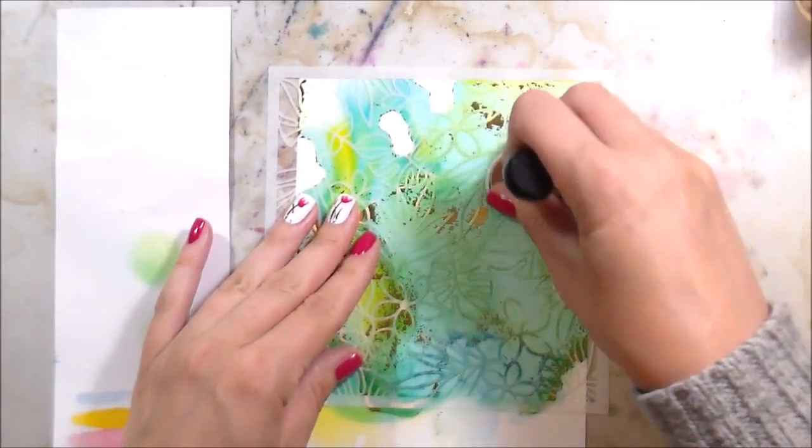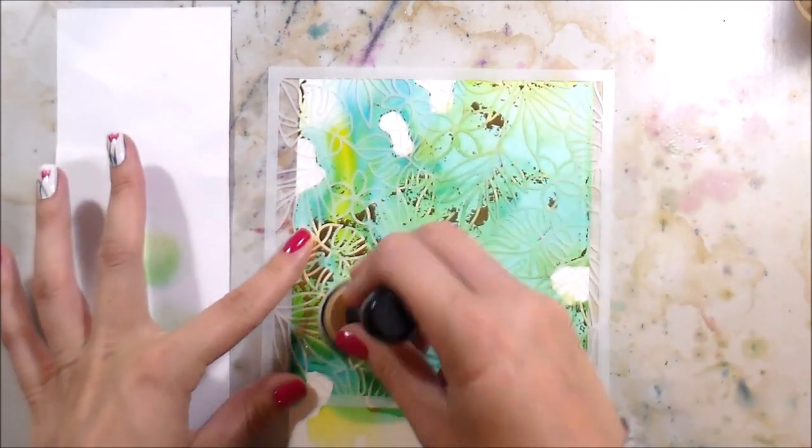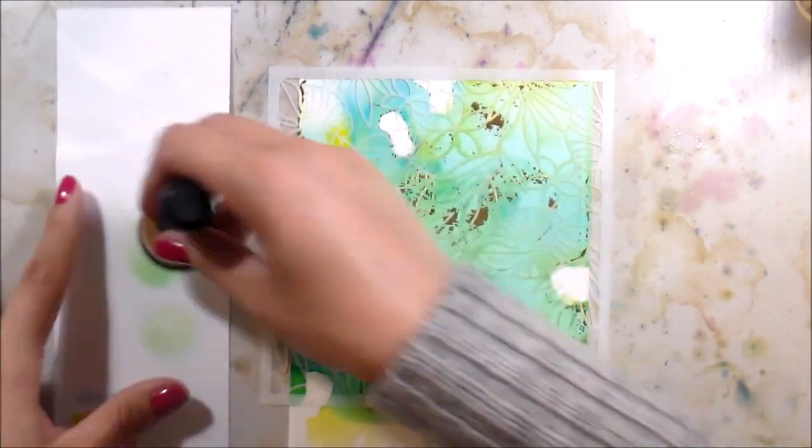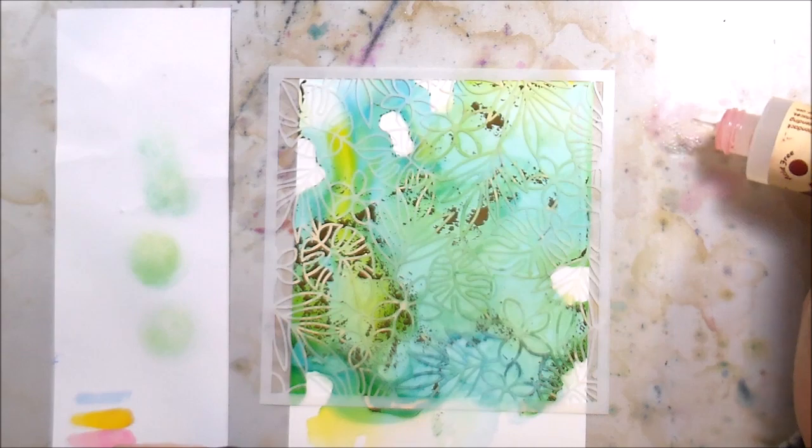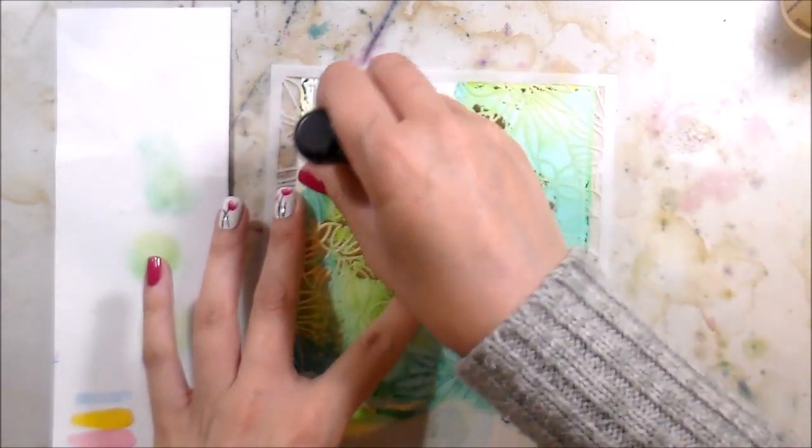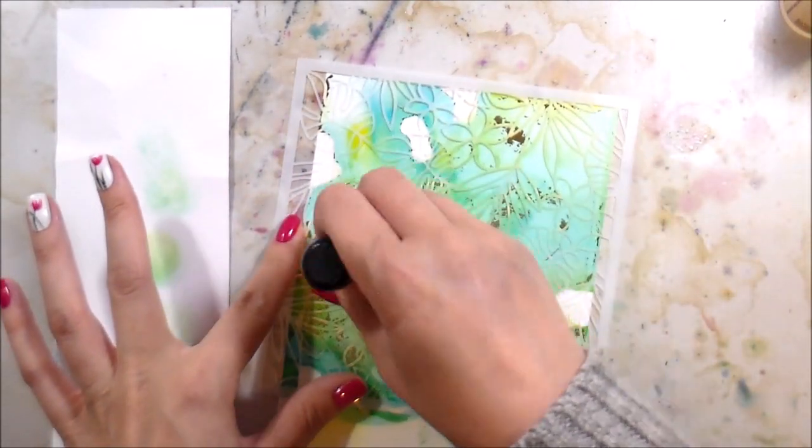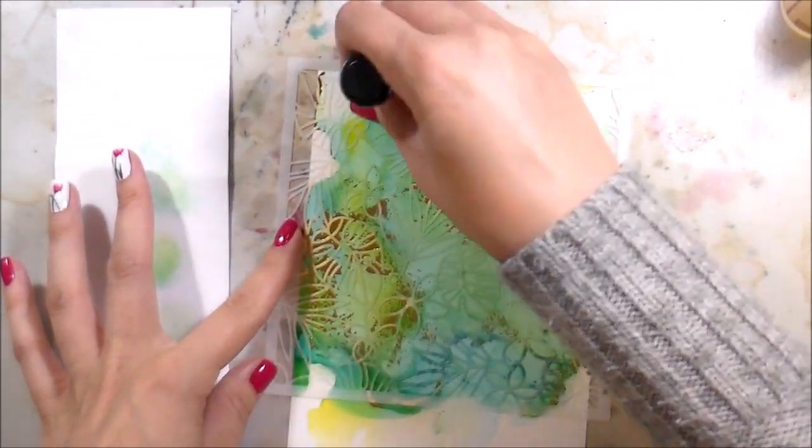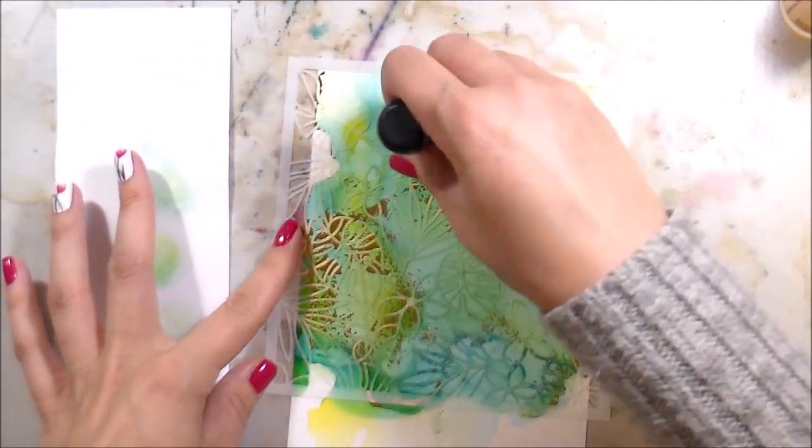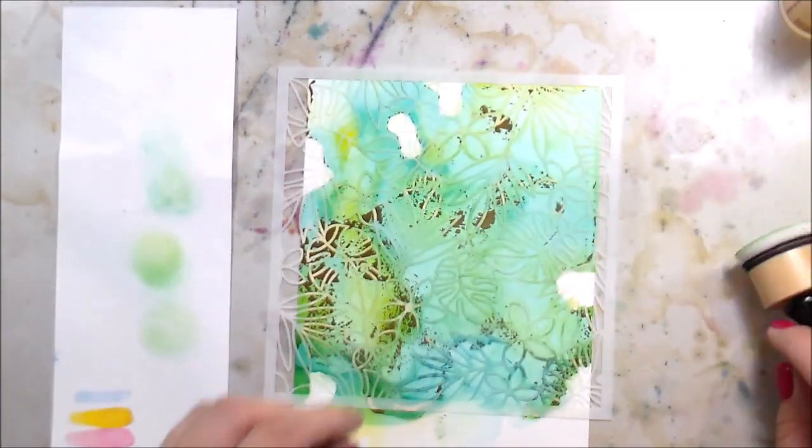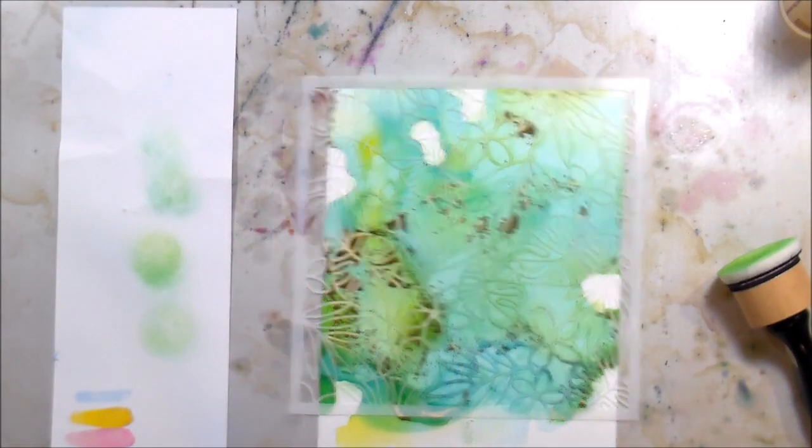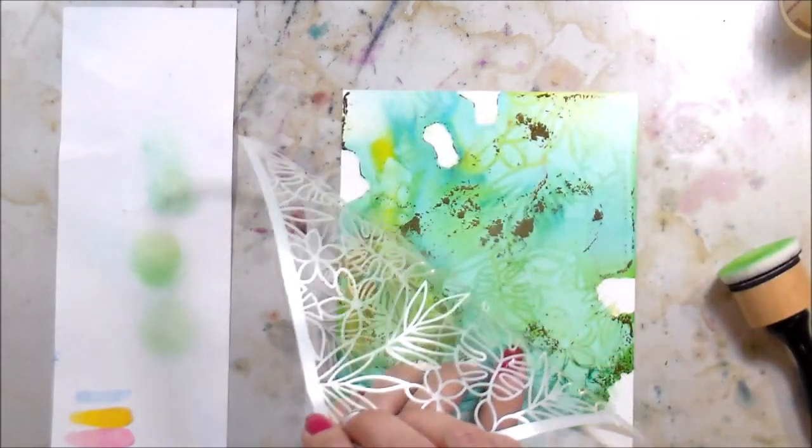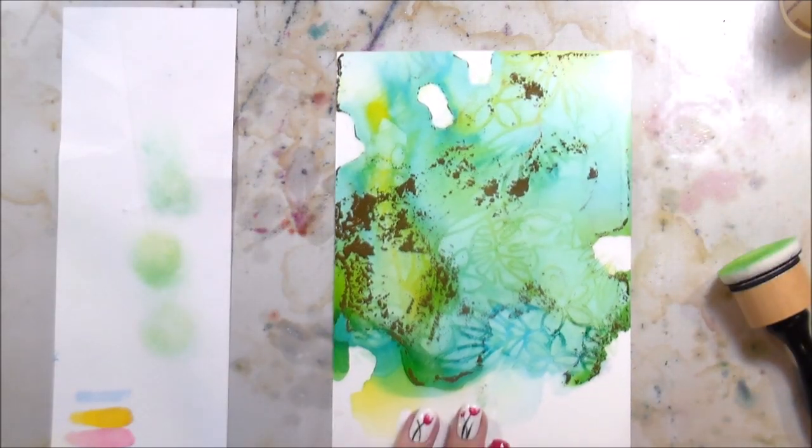I've seen people substitute rubbing alcohol for that. I don't know how well that would work. But basically, I'm just going to make small little smushy circles all over to pick up the ink where the stencil is not, wiping it off on that scrap piece of paper.